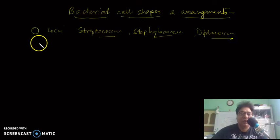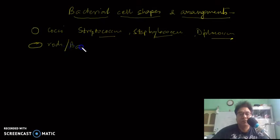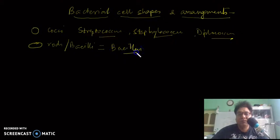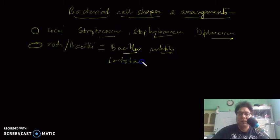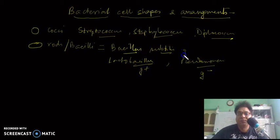Another type, which is most predominant, is the rod-shaped bacteria. Rod-shaped bacteria are also called bacilli. The genus Bacillus is the representative — for example, Bacillus subtilis and Bacillus megaterium. Other examples include Lactobacillus and Pseudomonas. Pseudomonas is a gram-negative bacteria; Bacillus is gram-positive. All are rod-shaped bacteria.